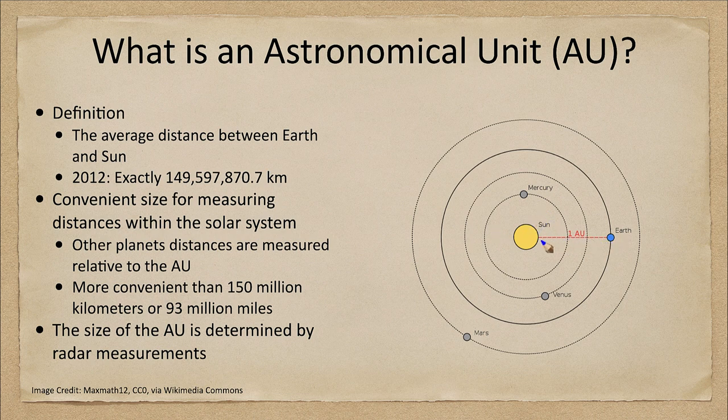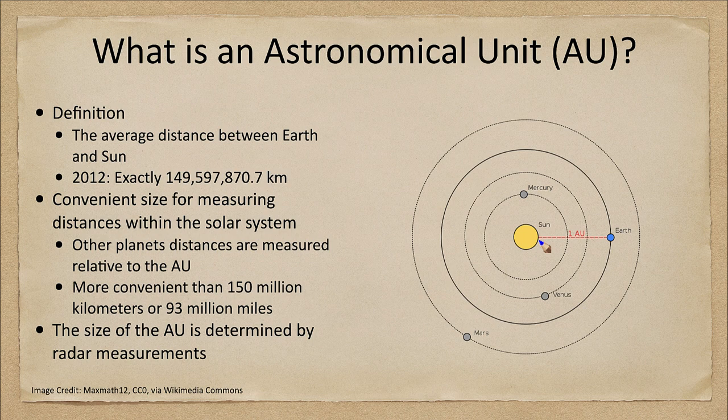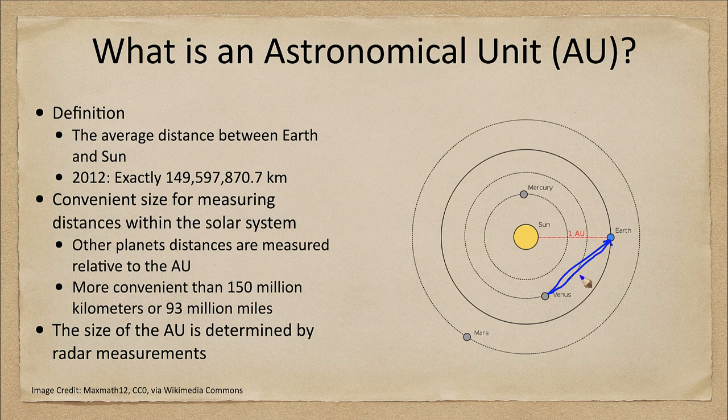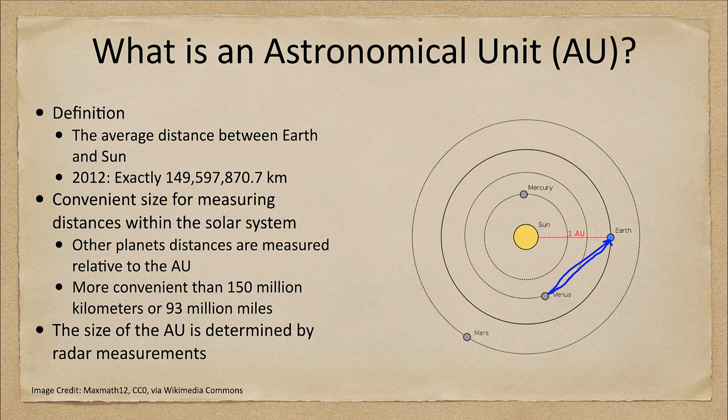So we can send a radar signal from Earth. Now we can't send it directly to the sun because the nature of the sun will not reflect radar. But we could reflect it off Venus and back and measure the amount of time it takes that signal to return. Radar waves travel at the speed of light so we know how fast it travels. We know how long it took to travel there we can find the distance and calibrate the astronomical unit.